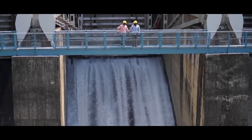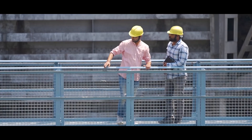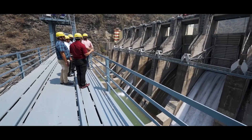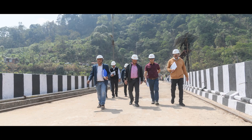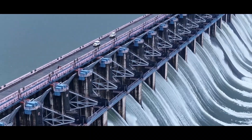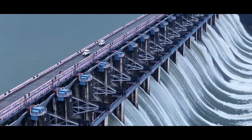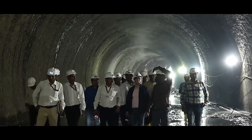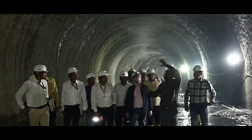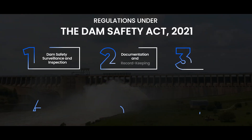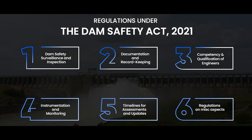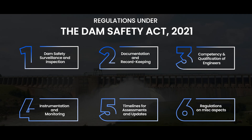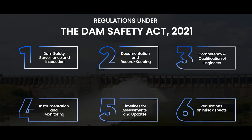These 19 regulations establish uniform safety standards, regular inspection protocols and emergency preparedness measures with National Safety Guidelines for long-term dam sustainability, and can be strategically grouped into six major categories to streamline implementation and ensure comprehensive dam safety.